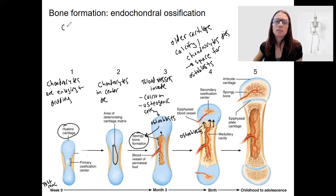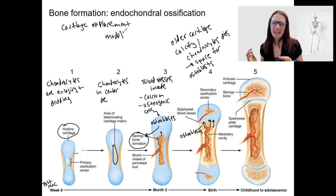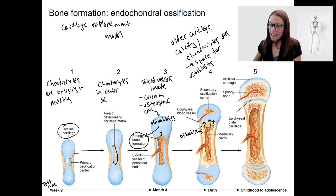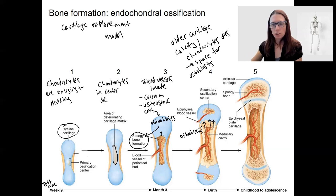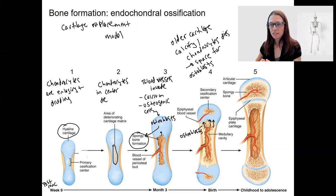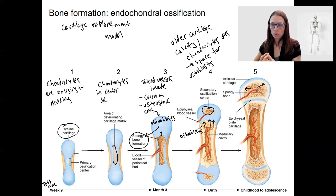This model is called the cartilage replacement model because you are replacing cartilage with bone. The cartilage is like a scaffold that exists and bone then replaces it. As new bone is added the shaft lengthens. Eventually we also have a secondary ossification center in the epiphyses. The entire diaphysis region has been elongating, and these secondary ossification centers form in the epiphyses through the same process — blood vessels invading and forming bone from the pre-existing cartilage.